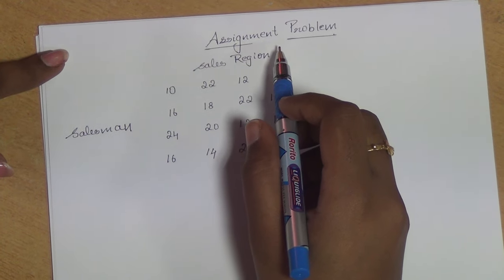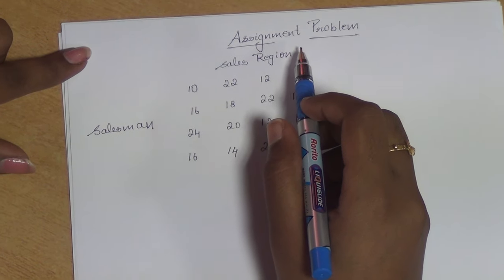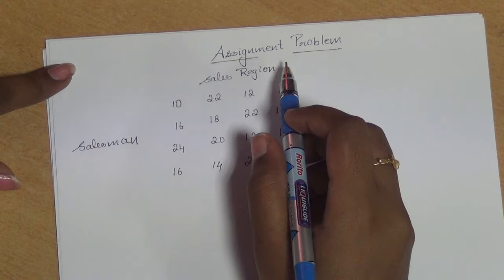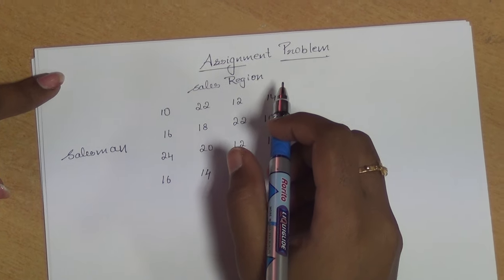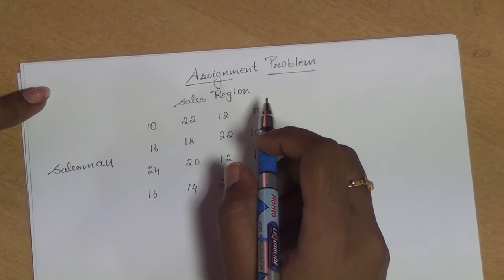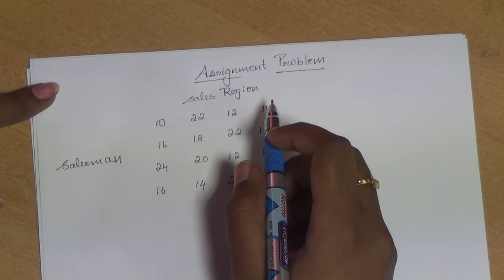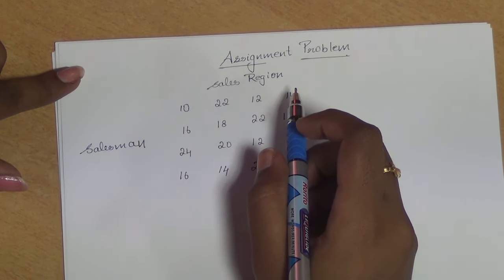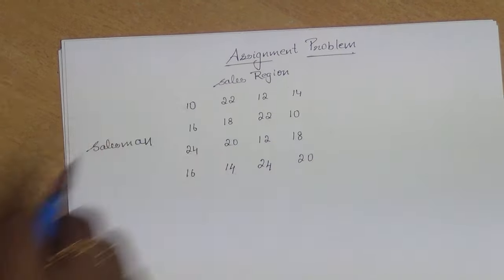Assignment problem. The assignment problem involves assigning each job to a person where the processing time is given. We should make sure that only one job is assigned to a person.